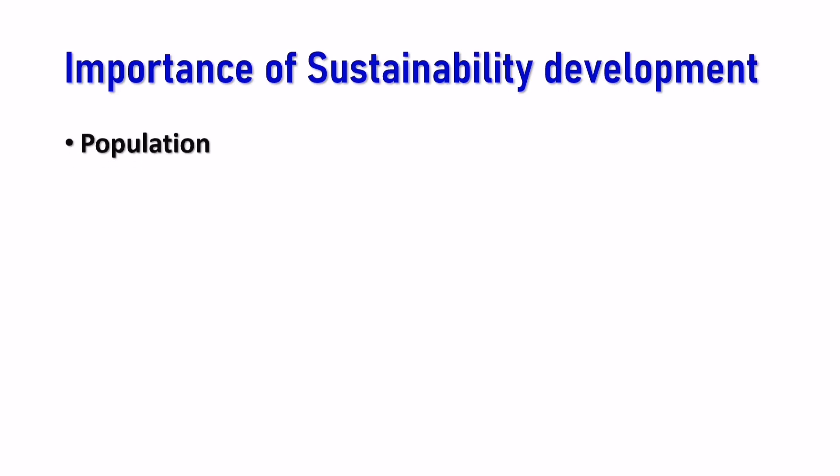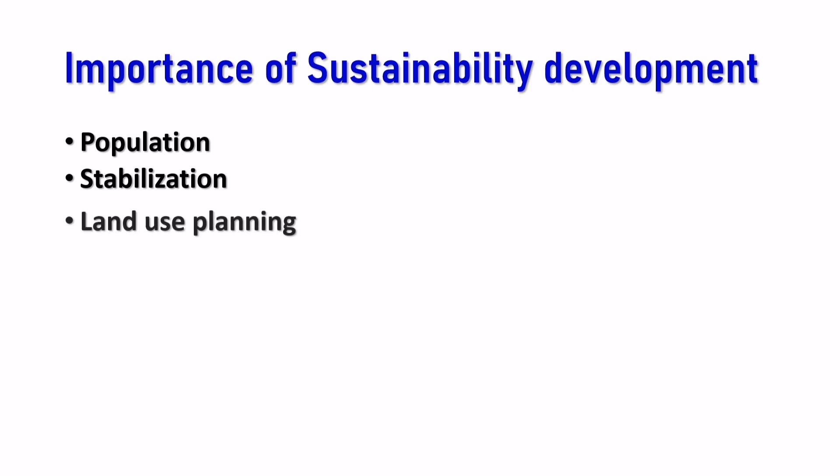Let us see the importance of sustainable development. Population stabilization — how many populations are in a country, like India, should be environmentally sustainable. Next is land use planning — we should not unnecessarily dig the land but use it wisely. That is land use planning.